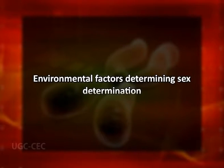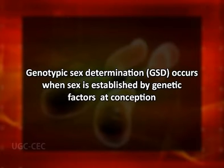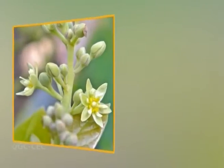Environmental sex determination is any sex determination system in which sex is established by a non-genetic cue, e.g. nutrient availability experienced within a discrete period after conception. In contrast, genotypic sex determination occurs when sex is established by genetic factors, e.g. sex chromosomes, at conception. Environmental sex determination should not be confused with some forms of hermaphroditism in which sex is determined flexibly after birth, such as dichogamy.